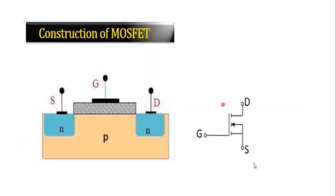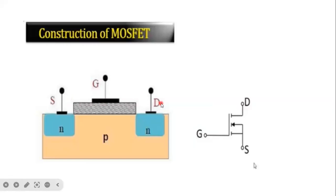This is a simple construction of the MOSFET. Generally, the MOSFET has three terminals, same as the transistor. A transistor has emitter, base, and collector. Similarly, the MOSFET also has three different types of terminals: one is called source, the second is called gate, and the third is called drain.